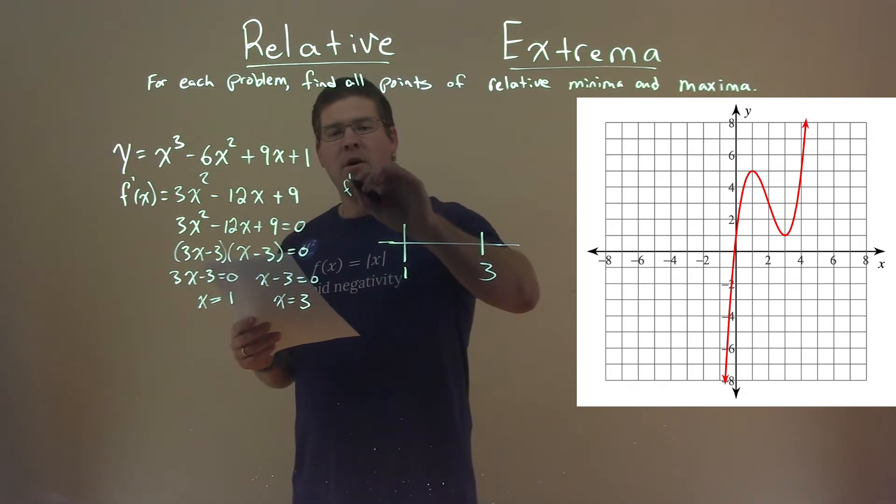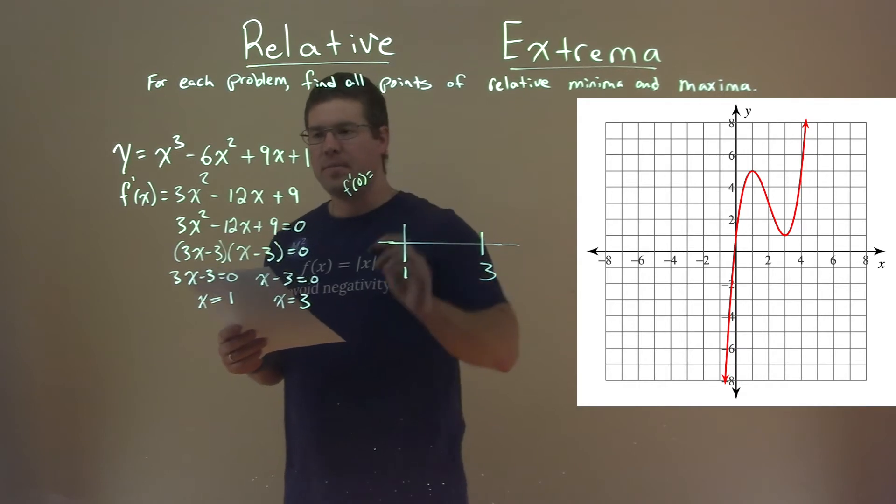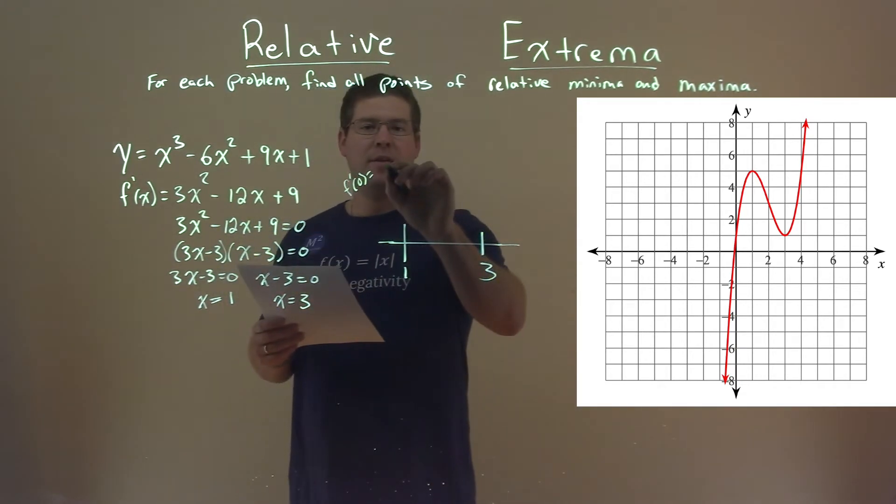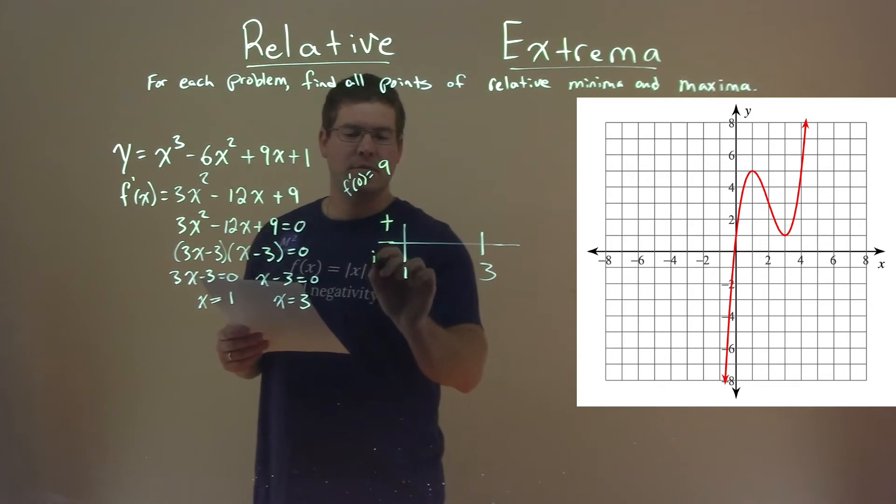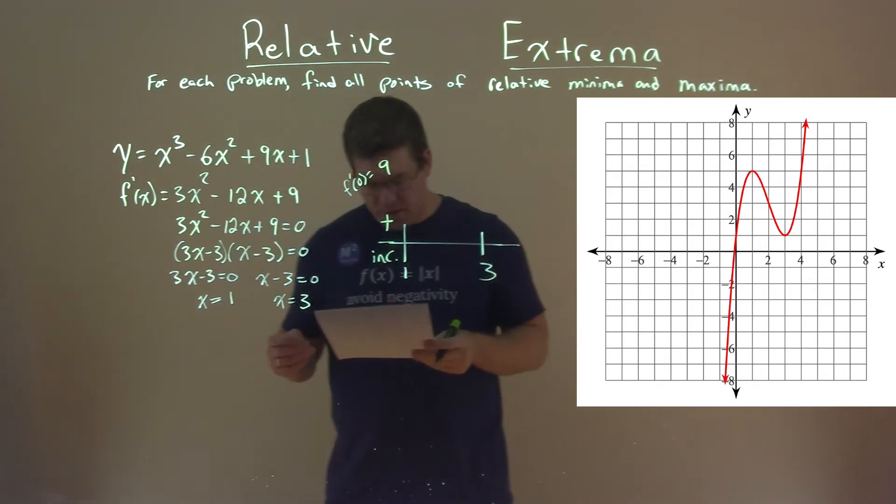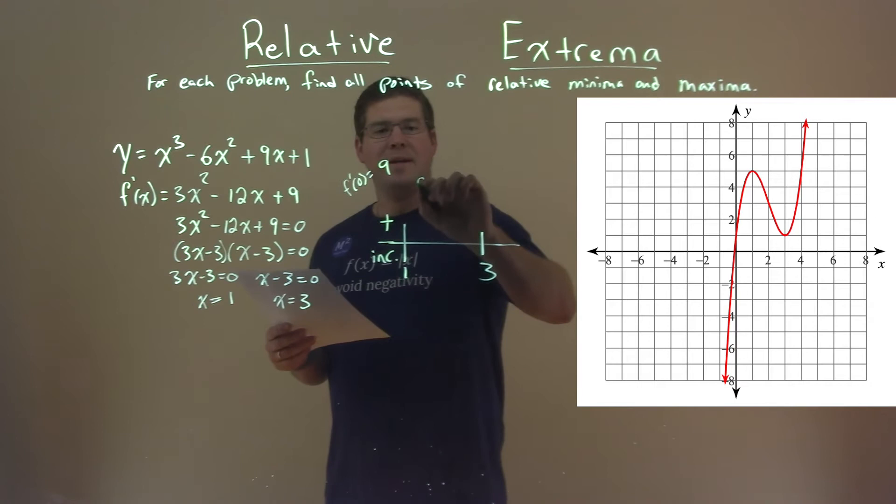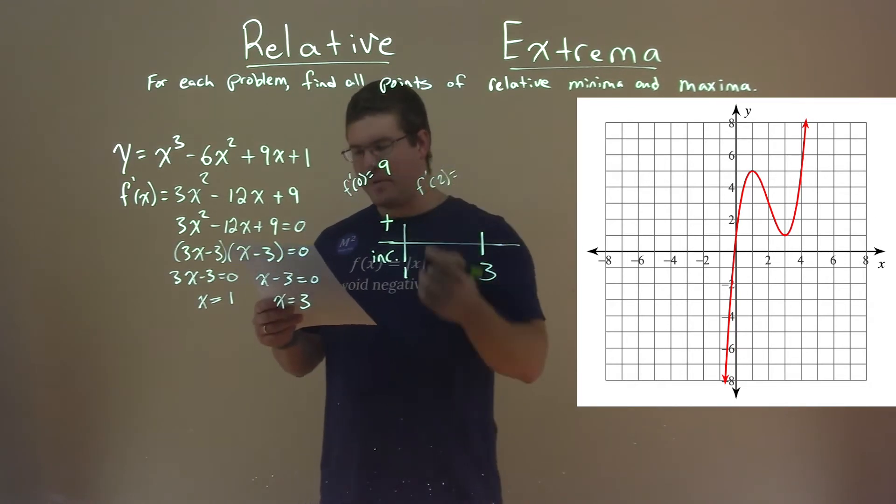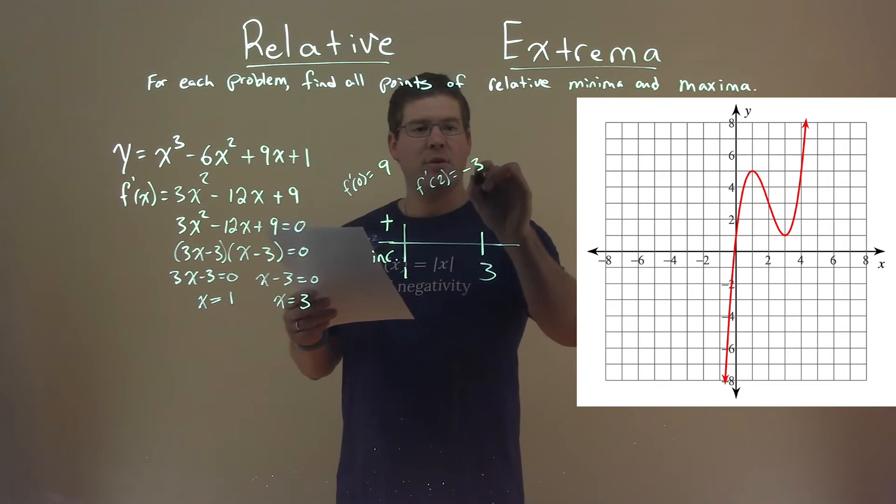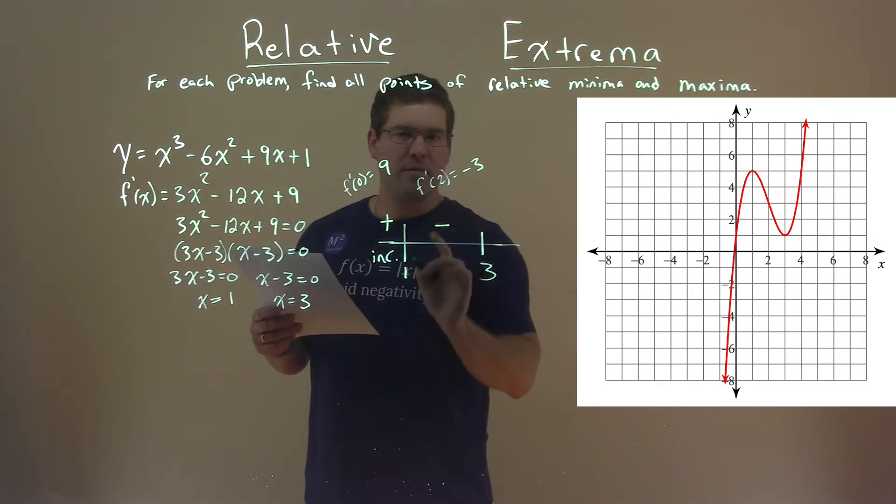So I found already f prime of 0 for you, and f prime of 0 came out to be 9. That's a pretty easy one, but I just care that it's positive, and therefore my function is increasing. Between 1 and 3, I picked f prime of 2. I picked 2 as the value. Plug that into my derivative, and I got a negative 3 value. It's negative, that's what I care about, and it's decreasing.